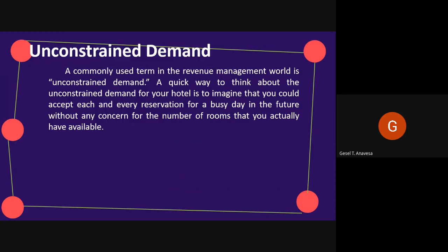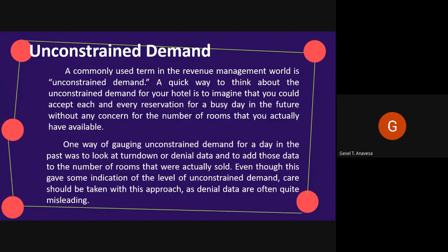In reality, the capacity of the hotel has to influence the number of reservations you can take and the number you are finally able to accommodate — this can be regarded as the constrained demand. On low-demand days, the unconstrained demand may equal the constrained demand. On busy days, you can be pretty sure that unconstrained demand is greater than constrained demand. One way of gauging unconstrained demand for a past day was to look at turn-down or denial data and add those to the number of rooms actually sold, though care should be taken as denial data are often quite misleading.